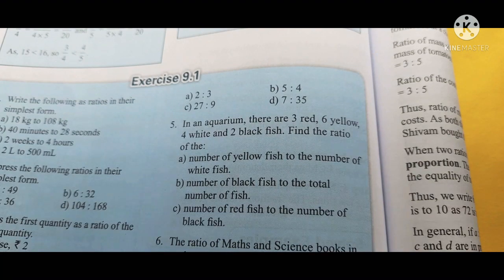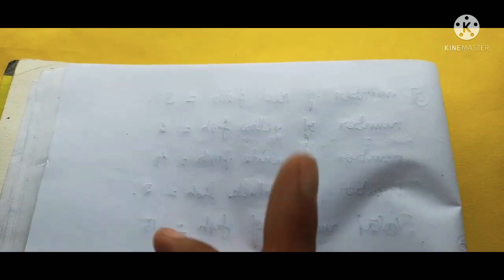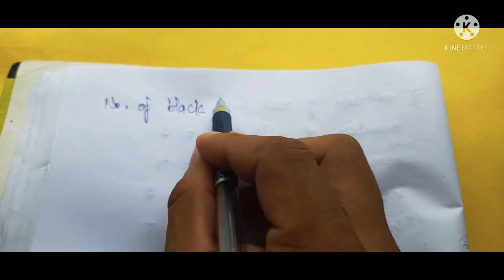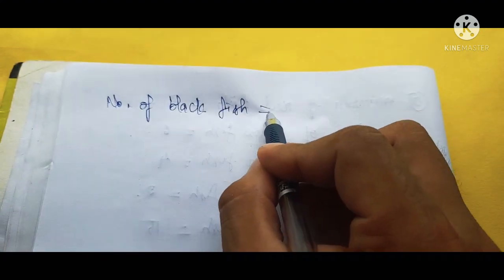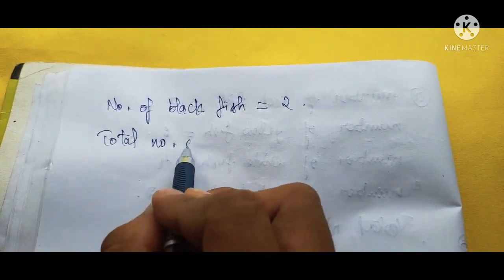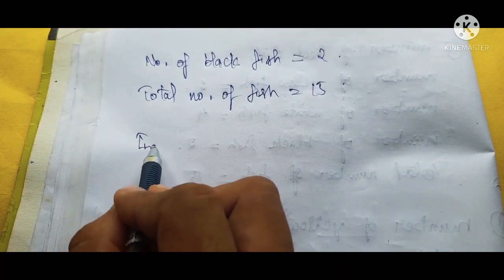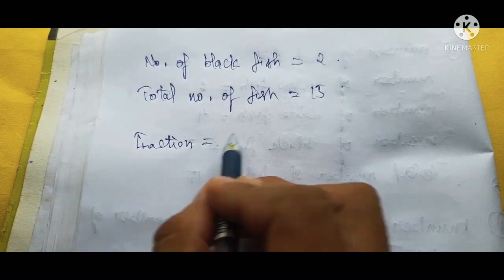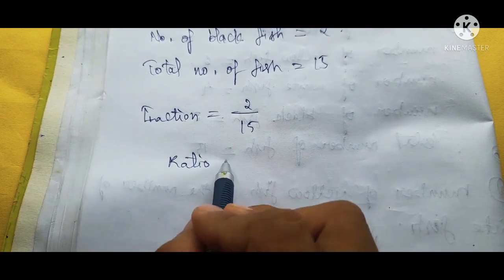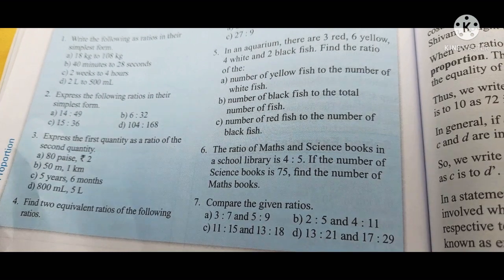Question 5B: ratio of number of black fish to the total number of fish. Black fish = 2, total fish = 15. Making a fraction: 2 by 15. We cannot cancel, so we convert to a ratio: 2 is to 15. This is the answer.